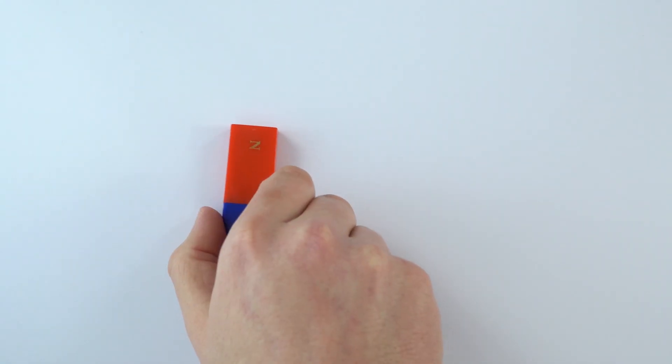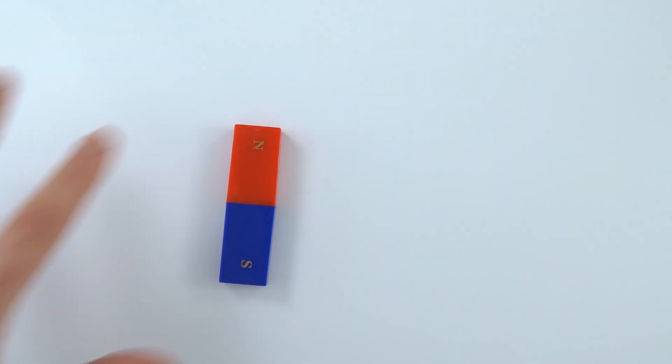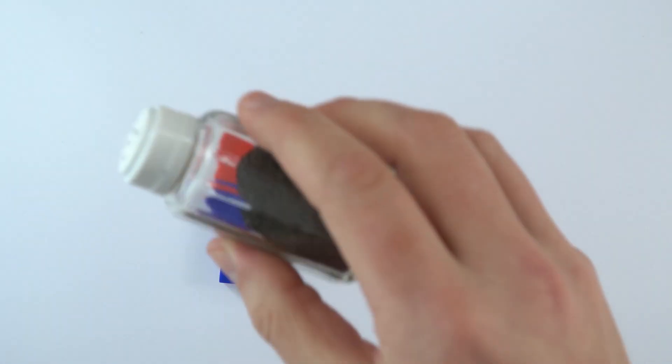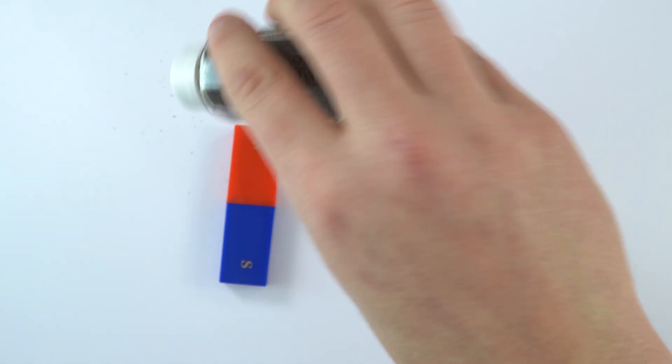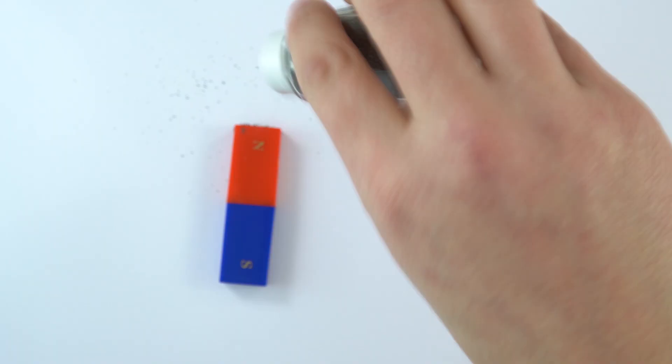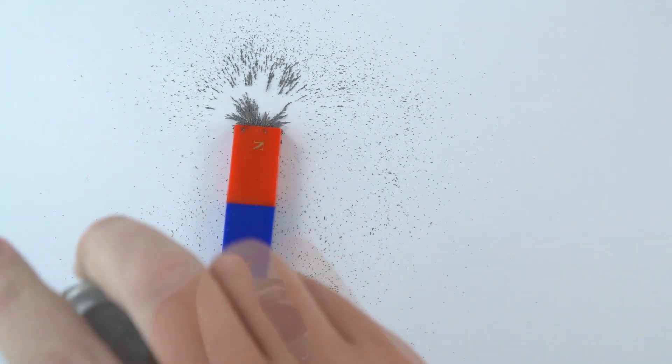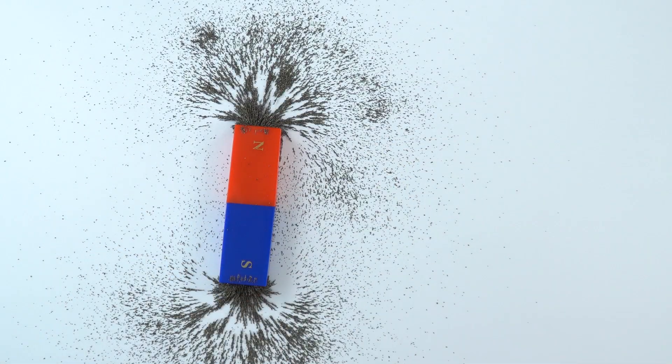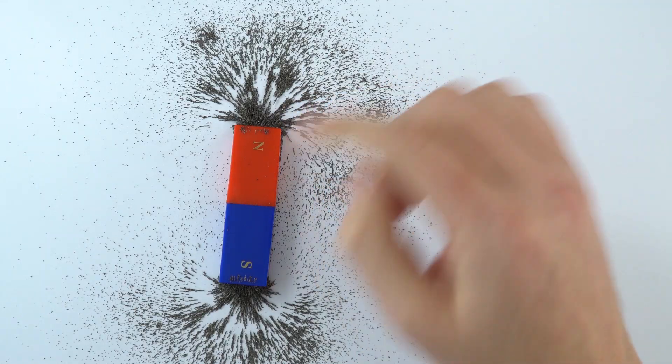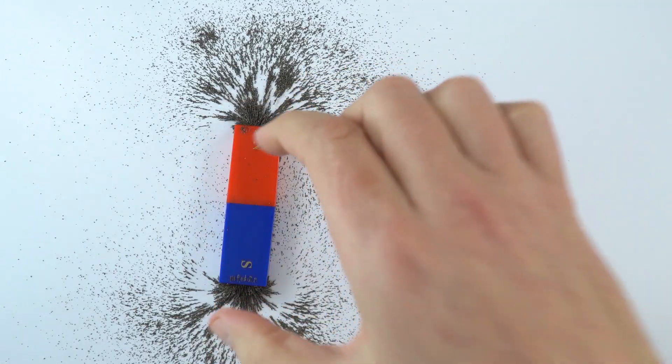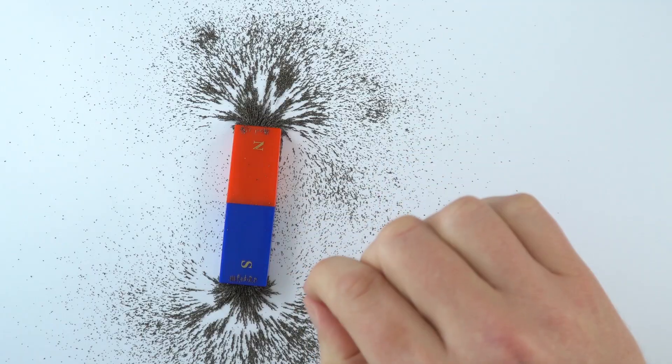Now we can actually show the shape of this field, because we can't actually see it, but we can show the shape if we use some of these iron filings. I'm just going to sprinkle these around. What we can see is that these start to align with the magnetic field lines, and it's strongest at the poles of this magnet.